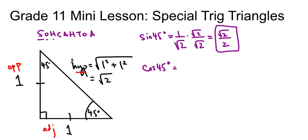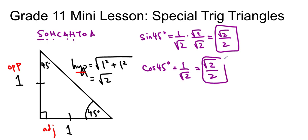Cos 45 degrees is the adjacent over the hypotenuse, so it's 1 over root 2, and when we rationalize it, it ends up being root 2 over 2 as well. Tan 45 degrees is equal to the opposite over the adjacent, which is 1 over 1, or in other words, 1.